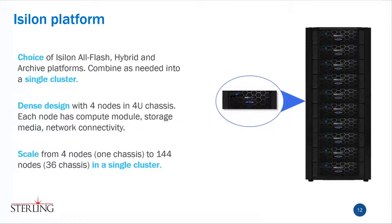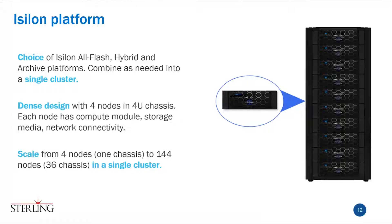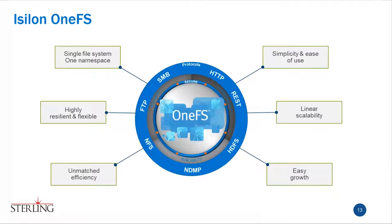When building out an Isilon you have a choice of all-flash, hybrid (flash and spinning disk together), and archive (slower spinning disks). You can combine these different building blocks into a single cluster to customize your IO profile. It uses a highly dense modular design — four nodes in a 4U chassis, each node with compute, storage, and networking built in. You can scale from three nodes in one chassis all the way to 144 nodes in a single cluster. The real advantage is in the 1FS file system.